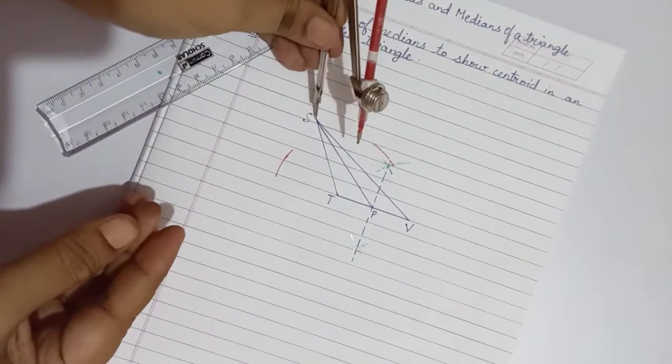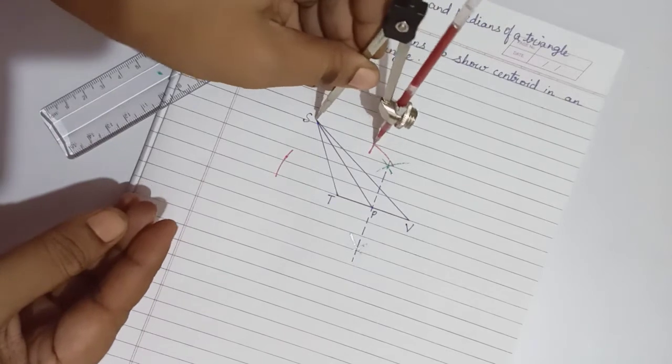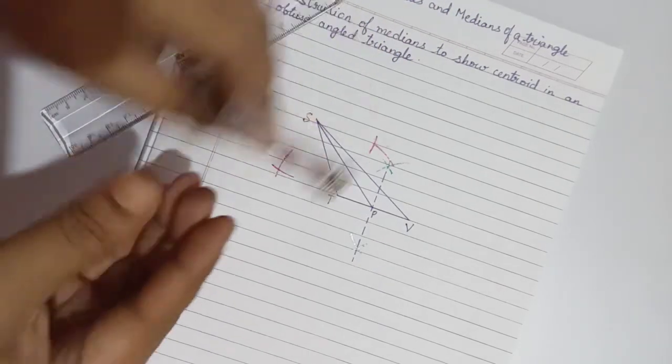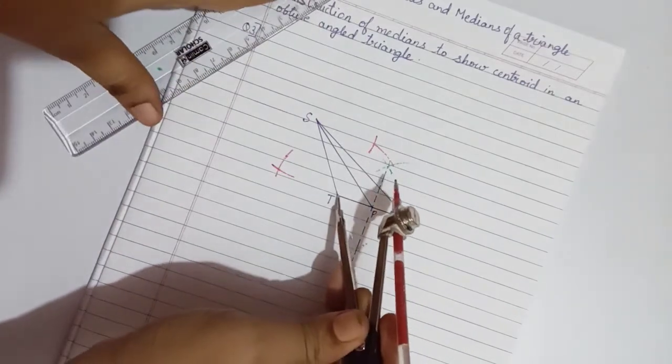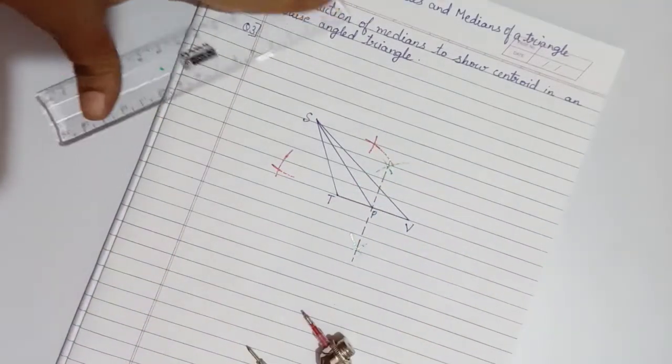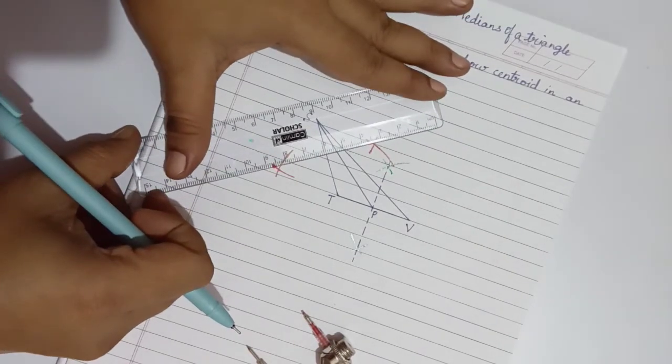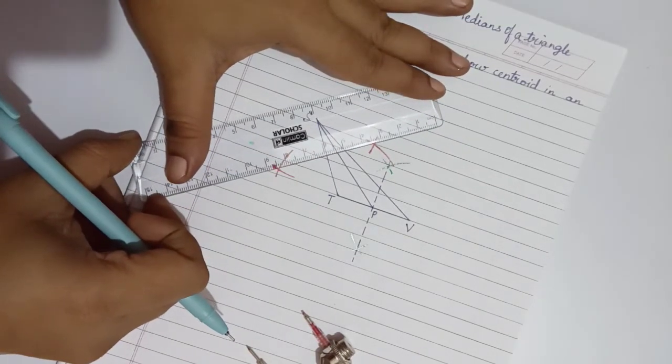From point S, intersect the arc up and down. You may extend this line if required. Join the two intersecting arcs with dotted lines.